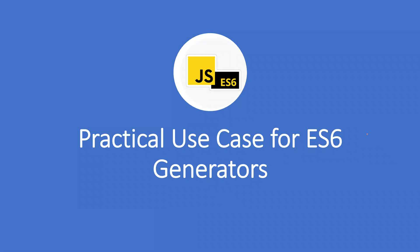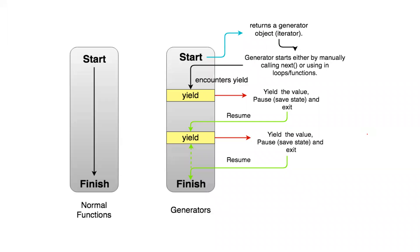Hi all, let's learn about ES6 generators and its practical use cases. In a normal function, we call a function and there would be a sequence of lines to be executed, and we may or may not have a return statement. But at one point, the function stops and it comes out.